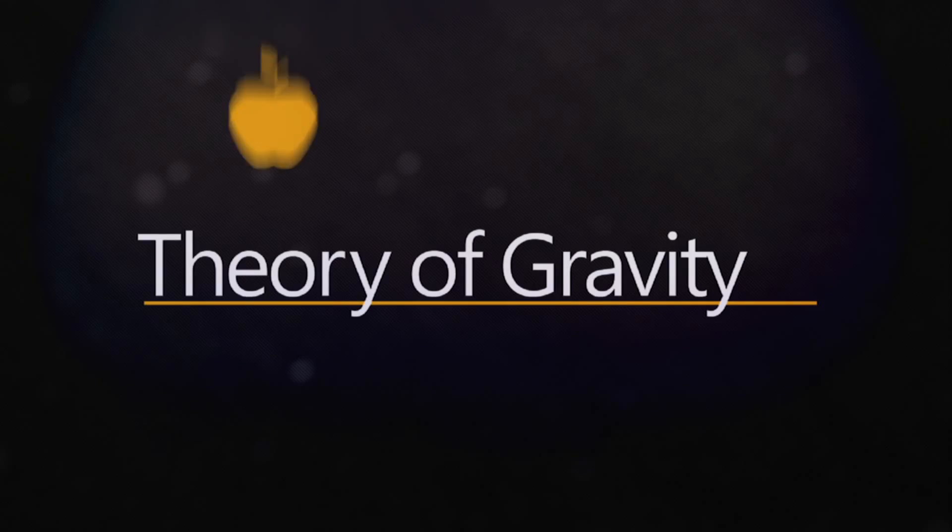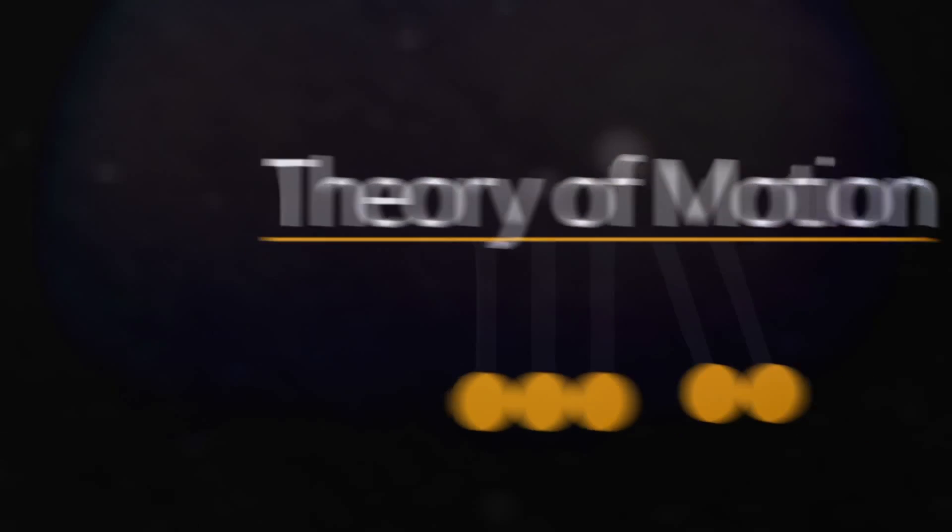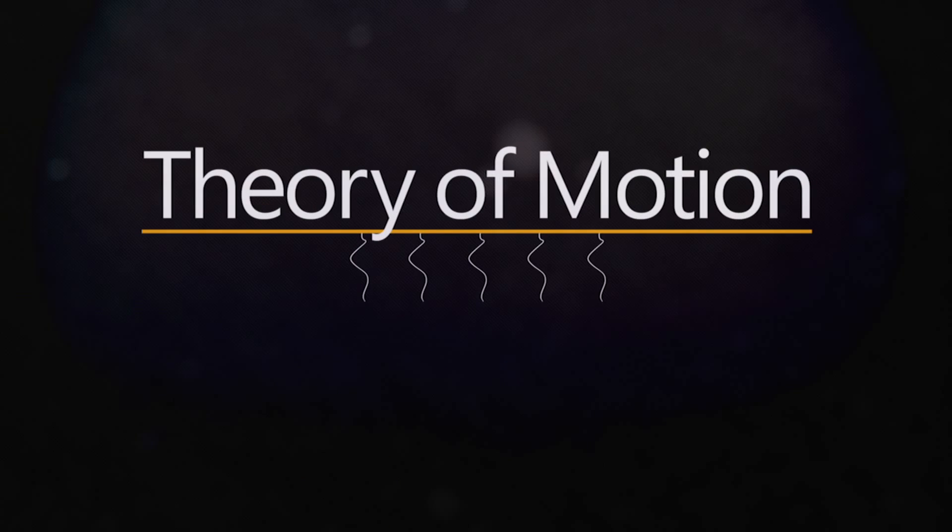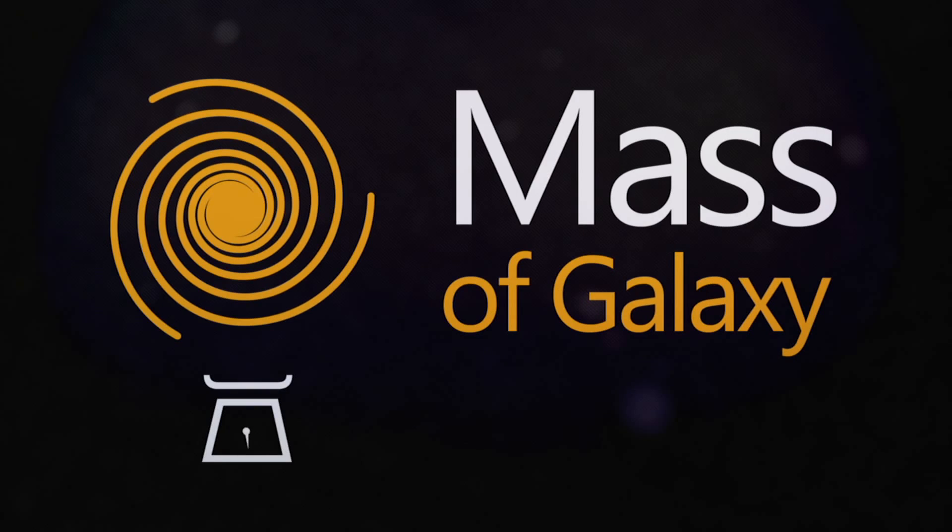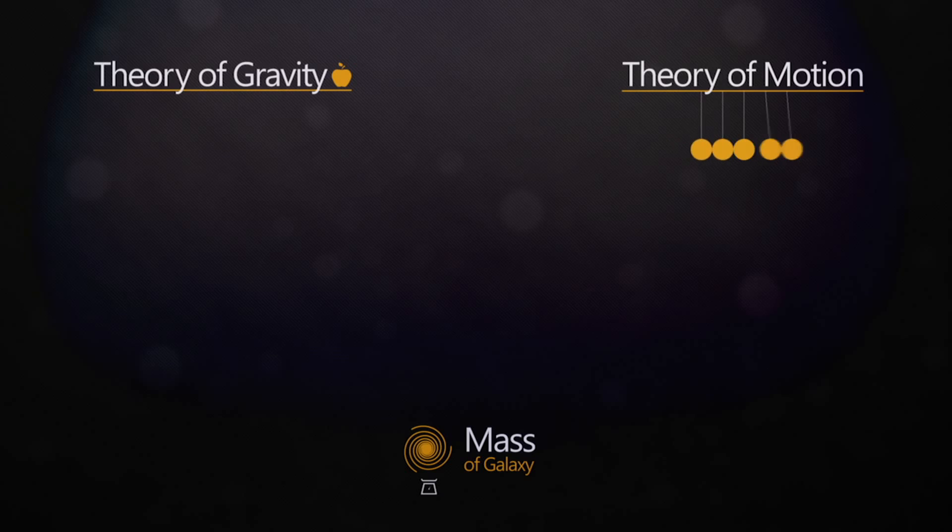Astronomers and physicists scrambled to find a mistake in their calculation. Was Newton's theory of gravity wrong? Was his theory of motion wrong? Or was it possible that astronomers had incorrectly measured the galaxy's mass? All options were investigated, and all were ruled out except one.